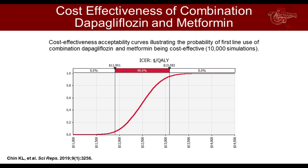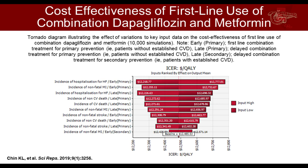Looking at data from dapagliflozin and metformin in combination therapy — it's cost-effective, fixing multiple organs. With this particular combination you're fixing roughly 2.5 organs; add nutrition, improved activity, and stress reduction, and you can address all 8 broken organs. Combination therapy with low hypo risk, weight loss potential, and cardiovascular safety is a win-win. The benefits of first-line combination therapy are significant in reducing the overall burden of diabetes — not only to the patient but to the payer and health care system. Changes are coming: combination therapy will be seen as a first-line therapy in the not-too-distant future.